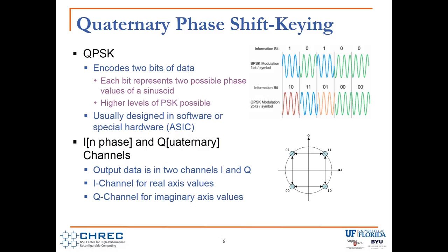QPSK is quaternary phase shift keying. We take two bits of data — each bit pair represents a possible phase of a sinusoid. QPSK is about as basic as you can go without doing binary phase shift keying. Compared to higher forms of PSK, it has lower bandwidth, but inter-symbol interference is much better because there's not as much data being sent out.